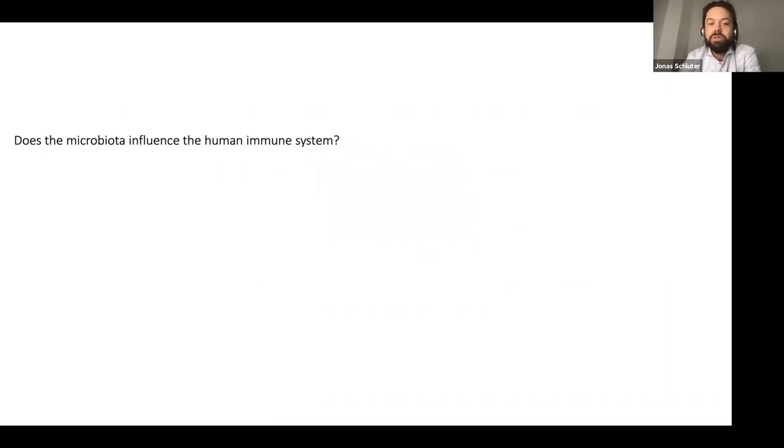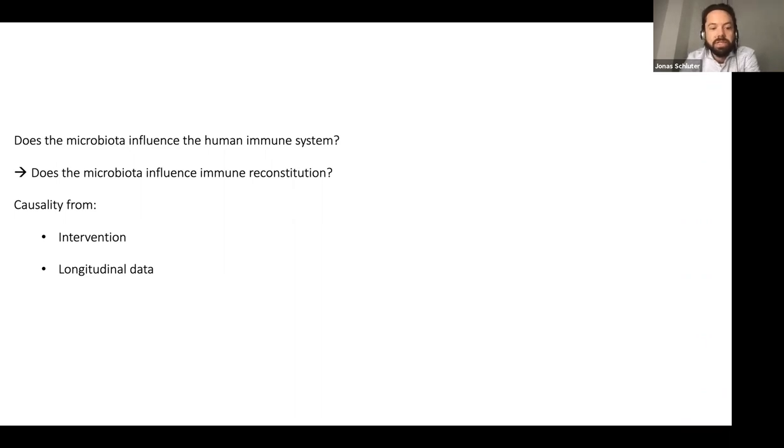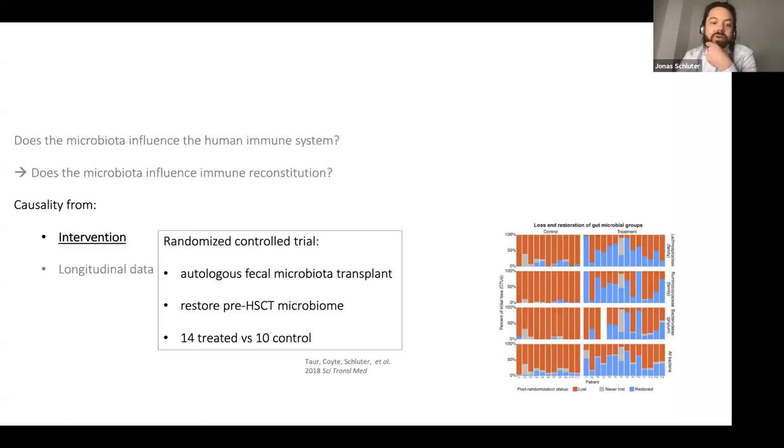In these records, many of the potential confounders of these interesting simultaneous dynamics are resolved. So with this data and one of the most interesting questions about the microbiome is, of course, does the microbiota influence the human immune system? With this data, we can curb our enthusiasm to a degree and ask instead, does the microbiota influence the immune reconstitution dynamics in these cancer patients? Today I'll present to you some data that narrows down and tries to indicate a causal relationship using two different data sets, one from a deliberate intervention in our patients and one from massive amounts of longitudinal data. This is a recent paper, the title of today's talk: The gut microbiota is associated with immune cell dynamics in humans.